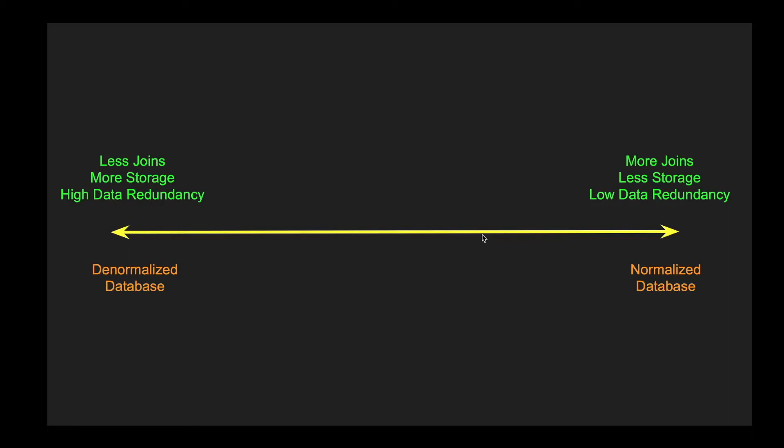At the same time, in a normalized database we are removing so much data repetition — data redundancy is very low — so the storage needed is much lower. You can't generalize and say a normalized database will always be slow or a denormalized one will always be fast. It depends — you have to look at the data and see how much repetition is happening.